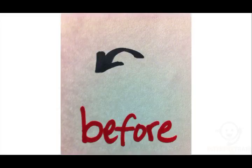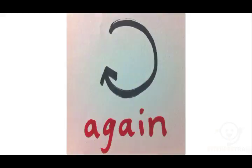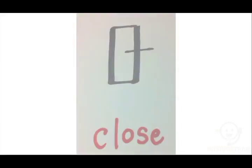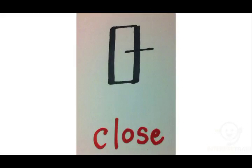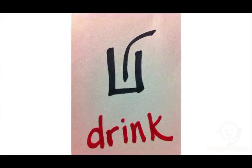Before, represented by a curved arrow pointing to the left. After, represented by a curved arrow pointing to the right. Again, represented by a curved arrow circling over itself. All, represented by an upside down A, which is the mathematical sign for all. Close, represented by a rectangular door with a minus sign on the right side. Open, represented by a rectangular door with a circle on the right side. Drink, represented by a rectangular glass with a curved straw.